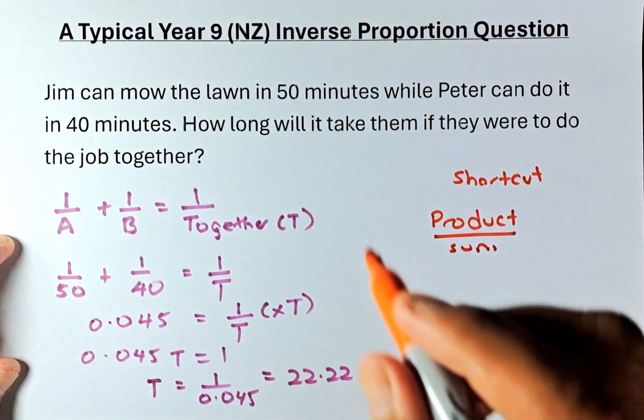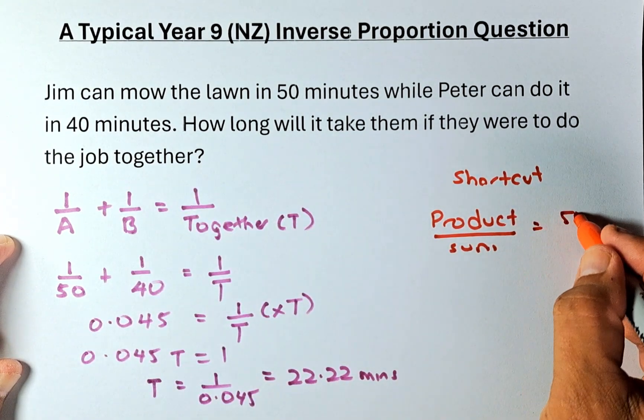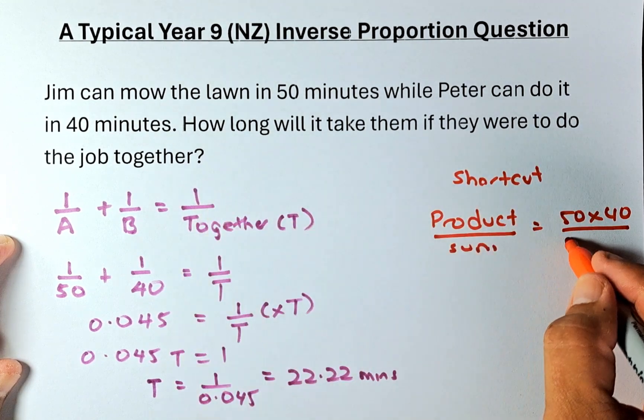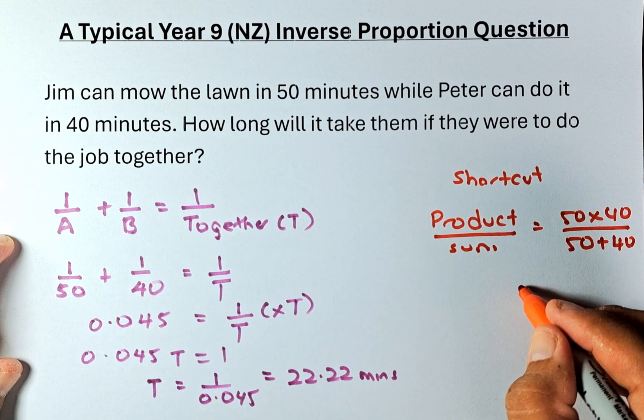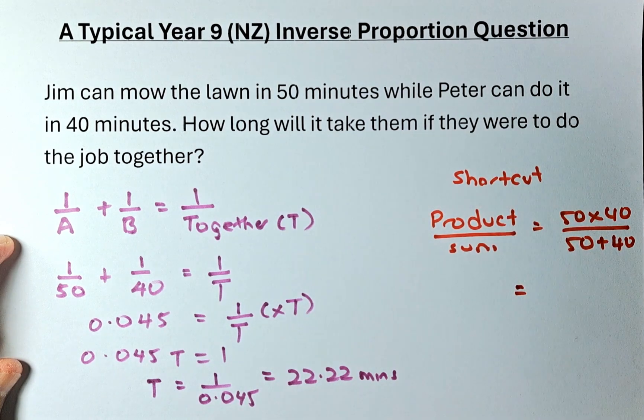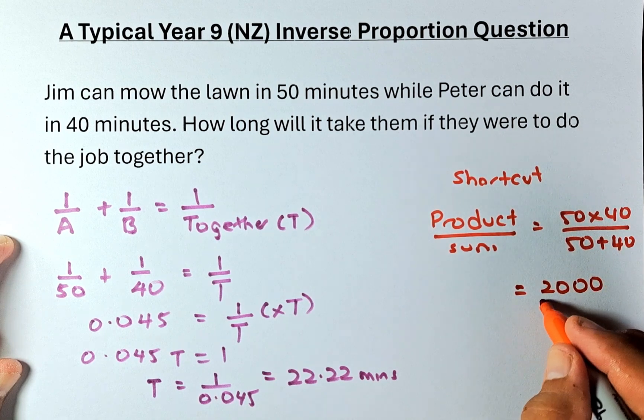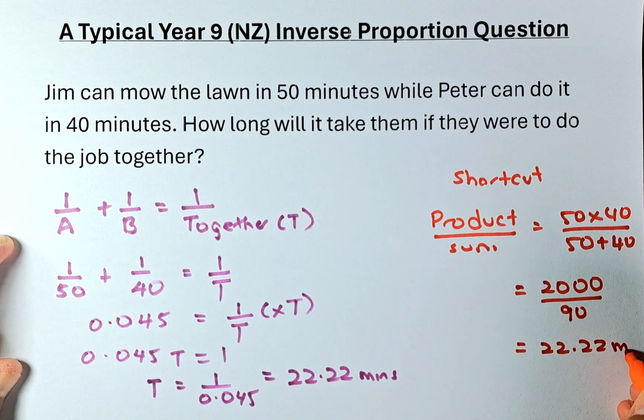The product means you multiply 50 and 40. So the product is going to be 50 times 40. And the sum is going to be 50 plus 40. So you do it in your calculator. 50 times 40 is going to be 2,000. And the sum is going to be 90. You put the calculator, you're going to get 22.22 minutes too.